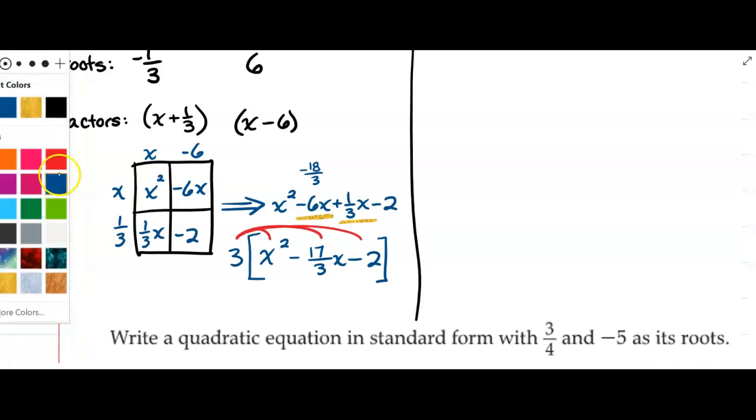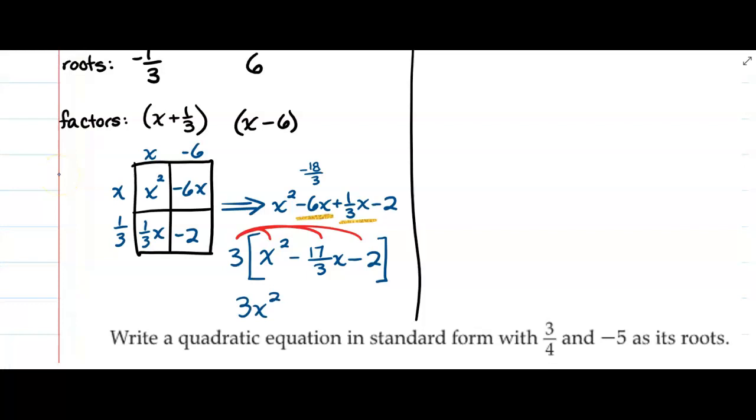And then my answer will be 3x² - 17x, 3 times negative 2 is negative 6. That's the answer.